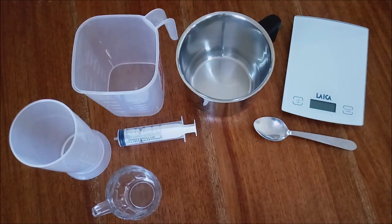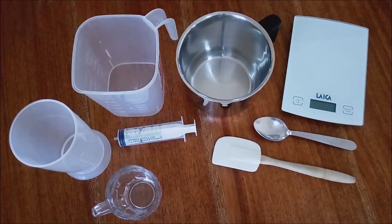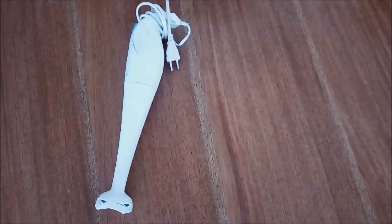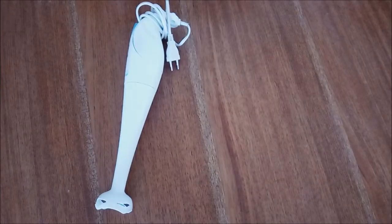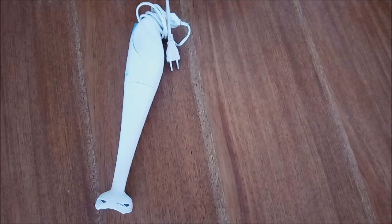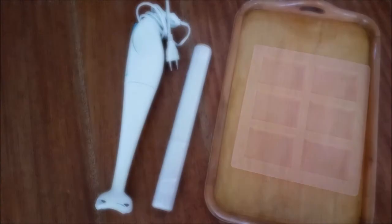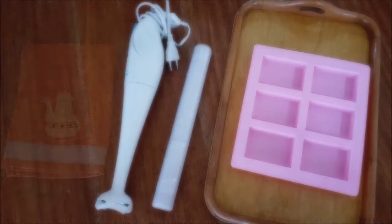One stainless steel spoon, one silicone spatula, one digital kitchen thermometer, and one hand blender exclusive for this purpose. After using the blender in contact with soda, it can no longer be used in contact with food again. Cling film, one tray, a silicone mold, and a cloth.